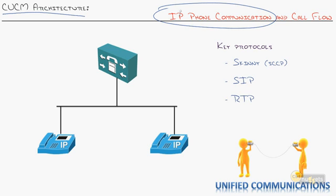I want to make sure I preface this. There is a whole blob of important stuff that the phones go through when they boot — the whole boot process. I'm going to have a nugget dedicated to just the boot process of the phone: where they get their firmware, find out where the call manager is, get an IP address. But in this nugget, I want to focus on how the day-to-day communication happens — normal interaction with the call manager after the phone is booted.